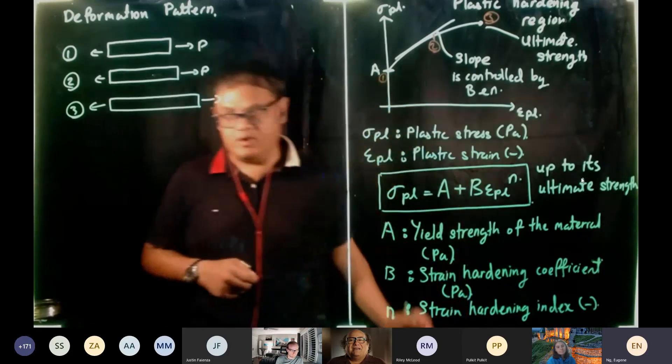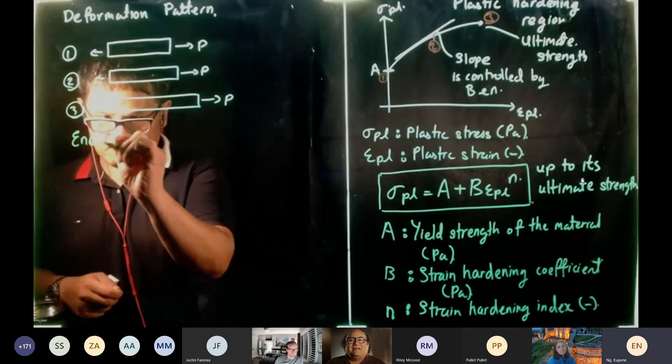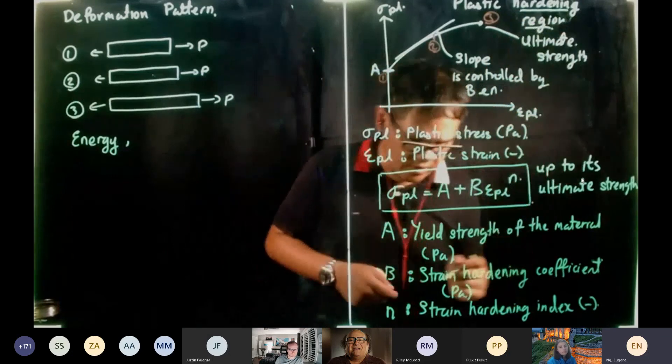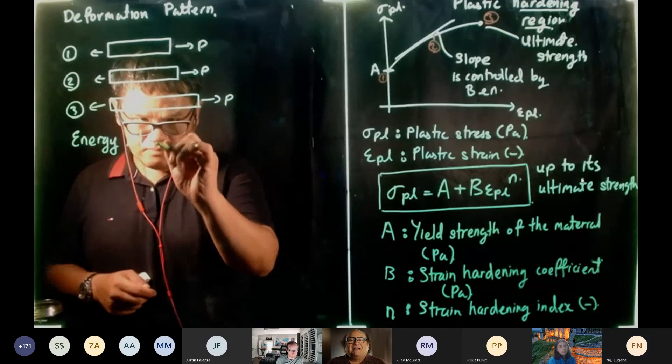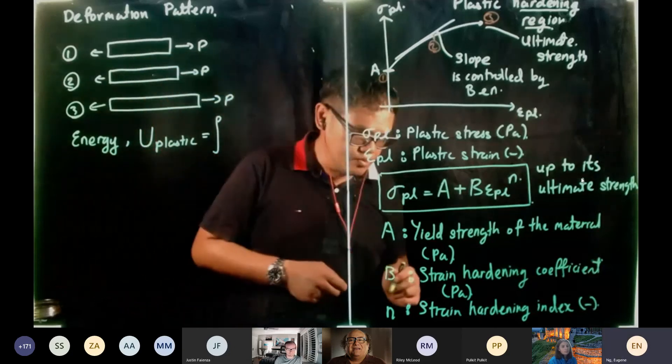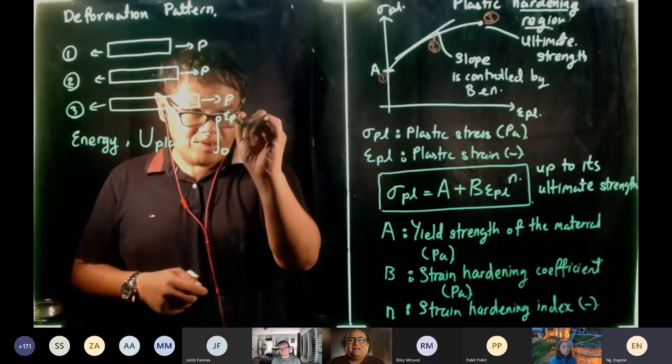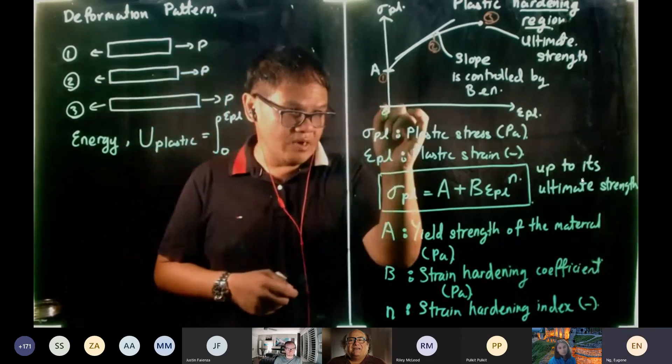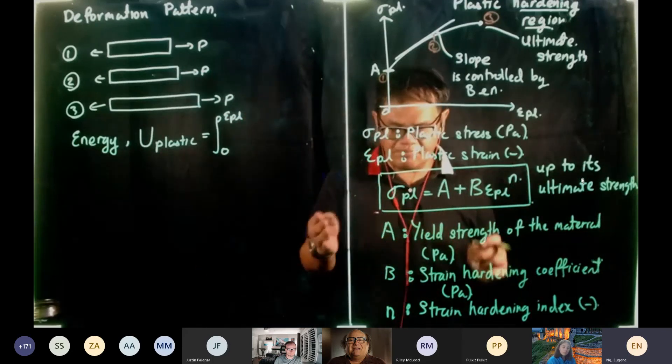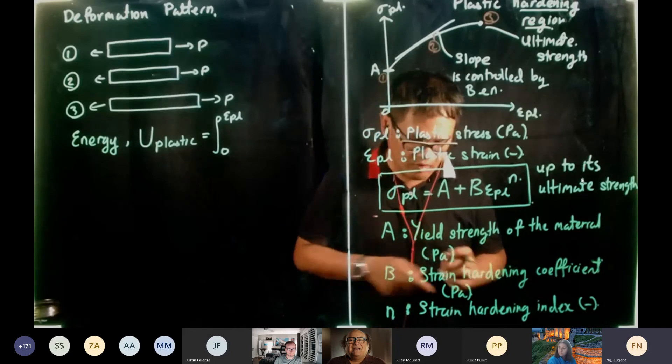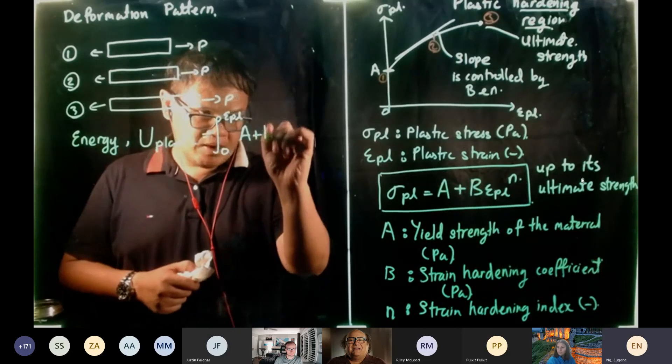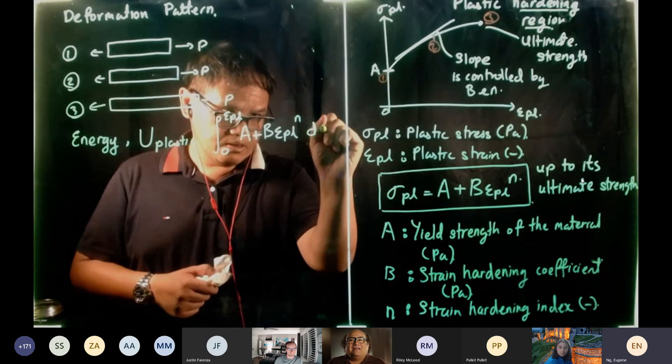So the energy, the energy. In the strain hardening, remember, this is a strain hardening region. It's going to be U plastic. And we're going to integrate, right, 0 to Epsilon PL. Now the 0 down here is at its U point. We push the, we shift the 0 up to its U point. Now the U point is at 0 epsilon now.